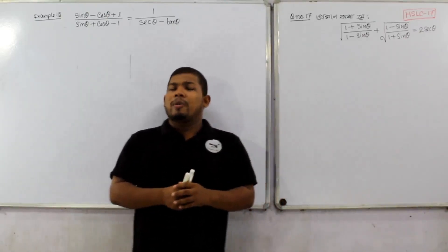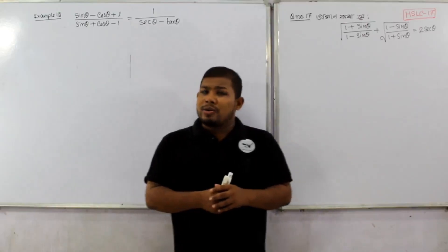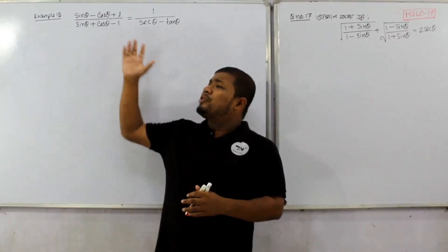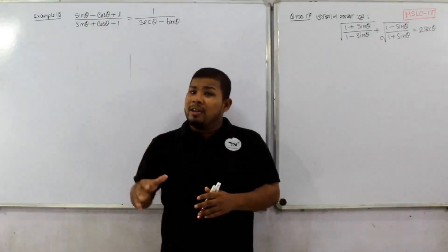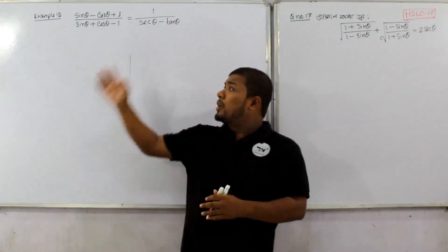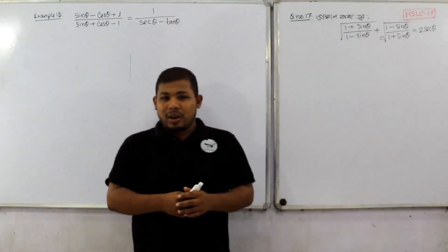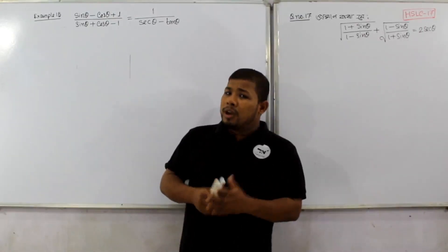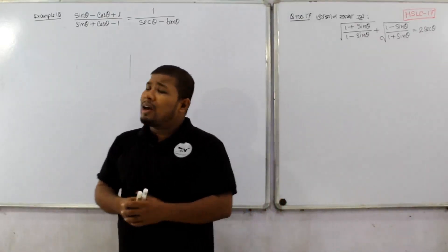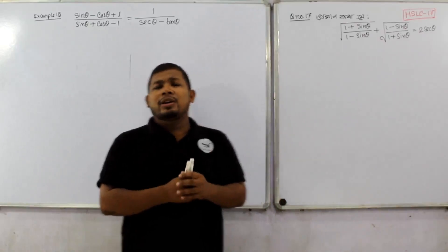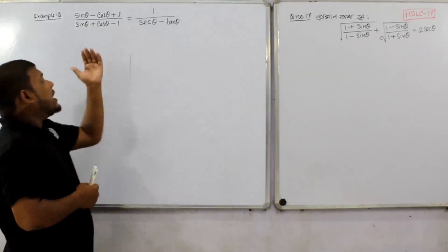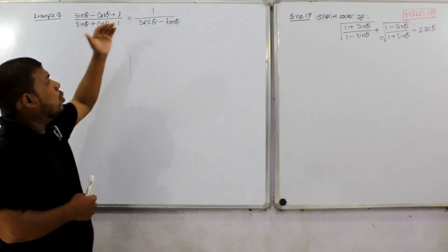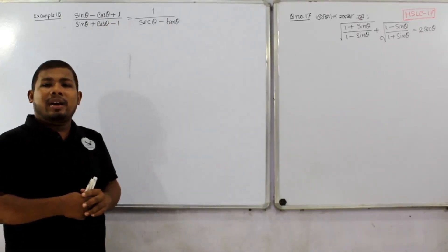This question is very important. This is a question from the A2 trigonometry topic. The question is: sin theta minus cos theta plus 1, divided by sin theta plus cos theta minus 1, is equal to 1 upon sin theta minus tan theta.